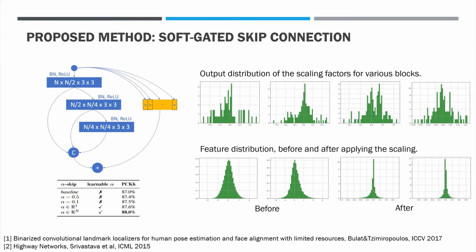As the figures show, most of the values of the gates are close to zero, in fact inhibiting the corresponding channel. Similarly, on the bottom right, we can see the distribution of activations before and after the gating. Notice that the magnitude of the signal is significantly diminished and the values squeezed out around zero. Overall, this alone can improve accuracy against the baseline by 1% in terms of PCKH on the MPI dataset.